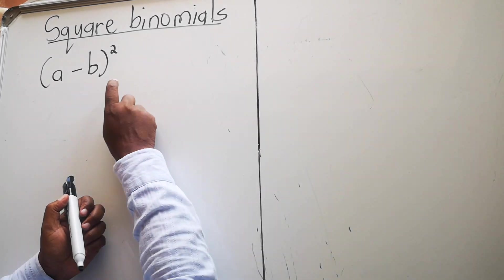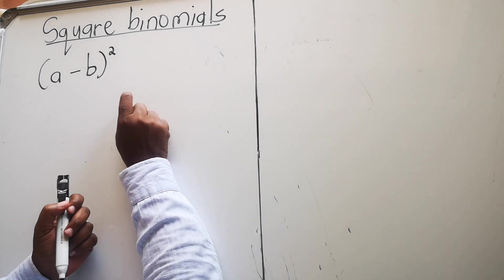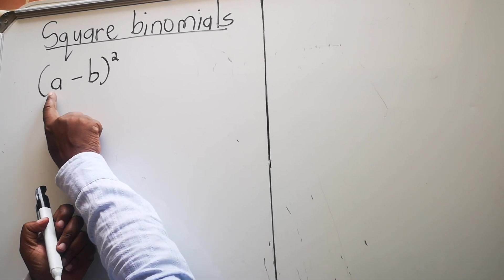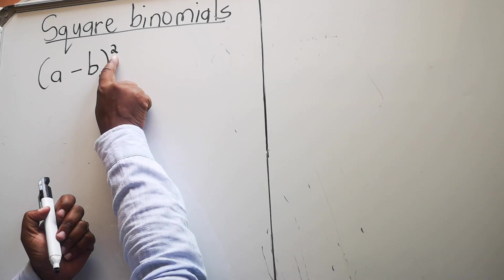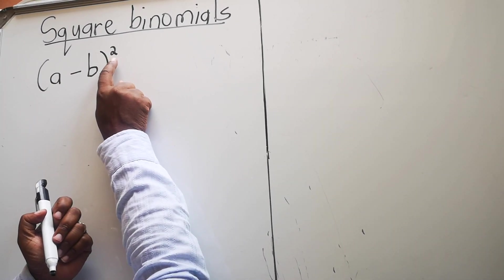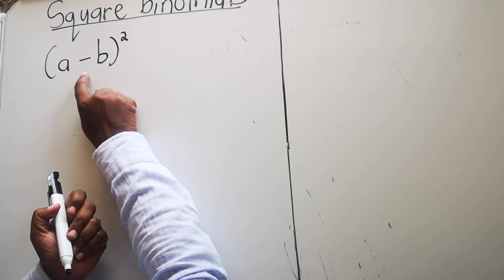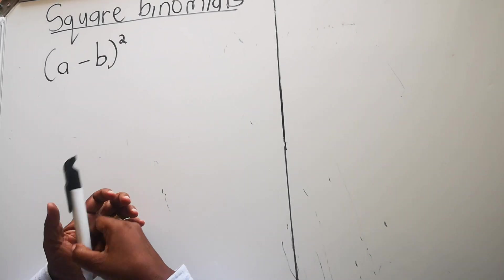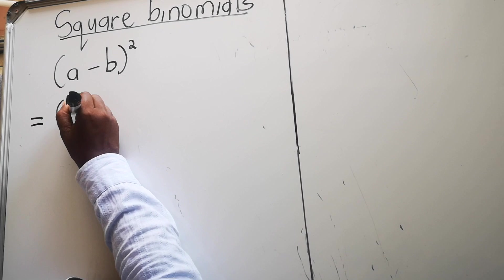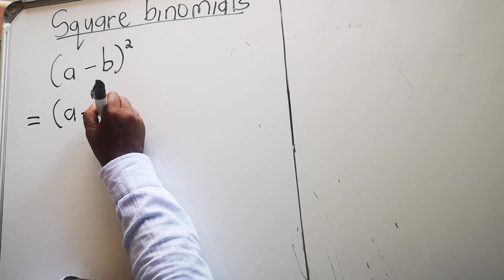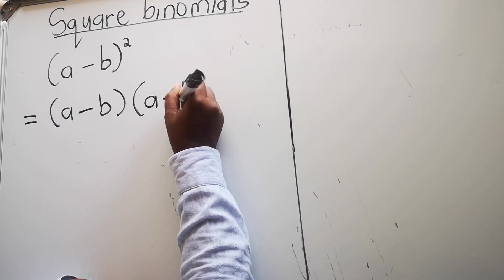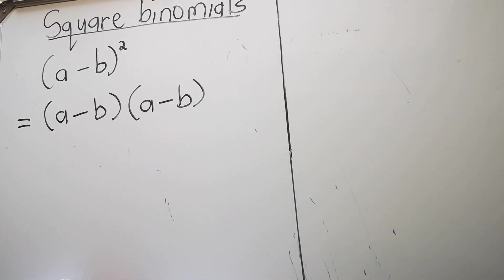Today's lesson is on the square binomial. You remember from our last lesson — a binomial has two terms. It's called a square binomial because you want to multiply it twice. When you have something squared it means you multiply twice, so we're going to write it twice and then multiply.